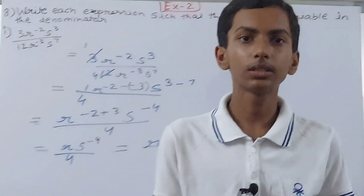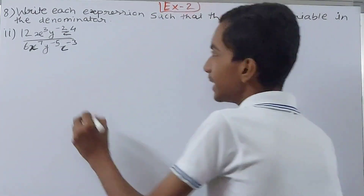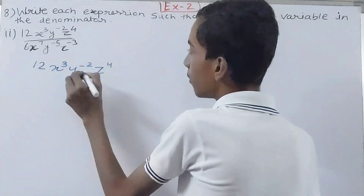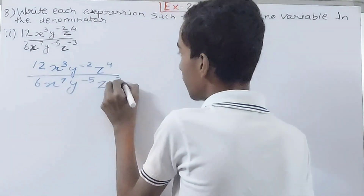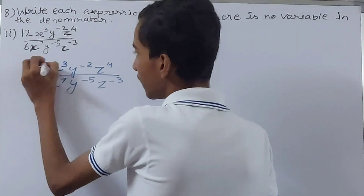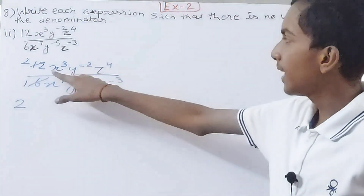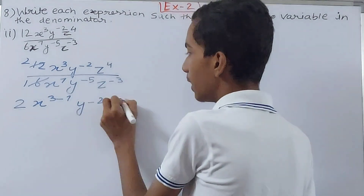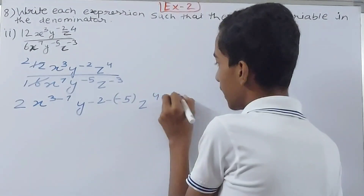The next part is 12x^3 y^(-2) z^4 upon 6x^7 y^(-5) z^(-3). Same process here — subtract the exponents. 6 and 12 cancel to give 1 and 2. So x becomes 3 - 7, y becomes -2 - (-5), and z becomes 4 - (-3).